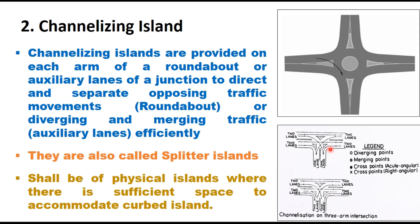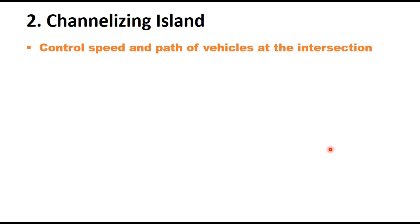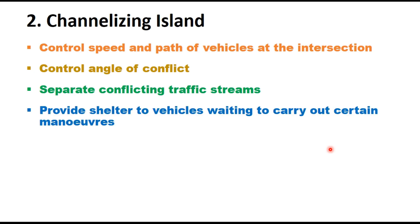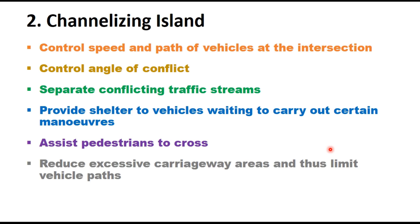Channelizing islands are typically in physical form where there is sufficient space to accommodate curved islands, and are effective only when provided in physical form. They control the speed and path of vehicles at the intersection, control the angle of conflict, and separate conflicting traffic streams. They provide shelter to vehicles waiting to carry out certain maneuvers like a right turn, assist pedestrians to cross the street, reduce excessive carriageway area, limit vehicle paths, and are used to locate traffic control devices.